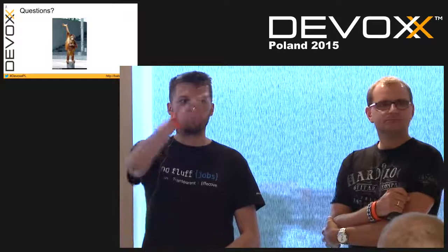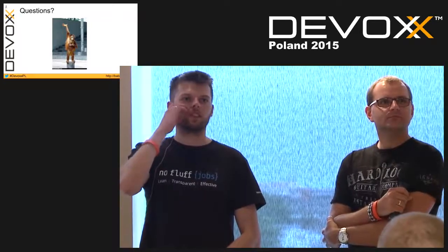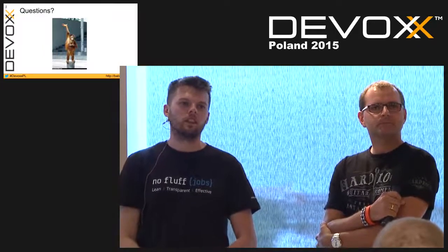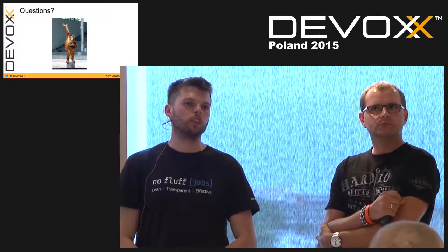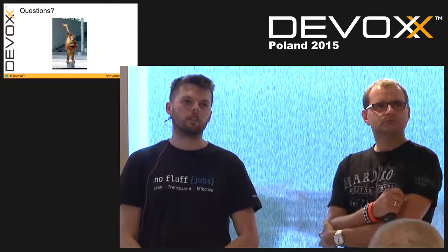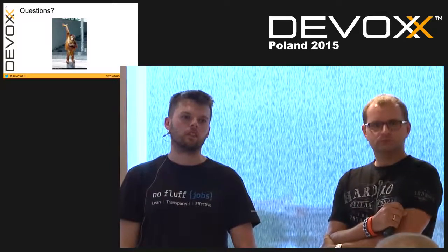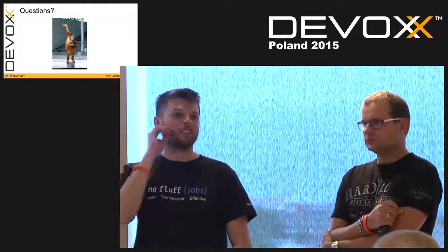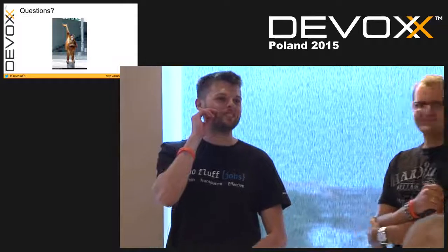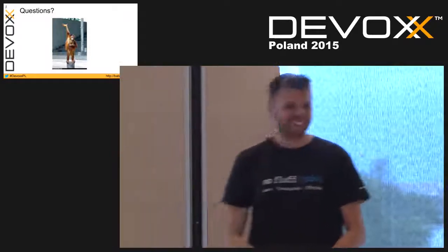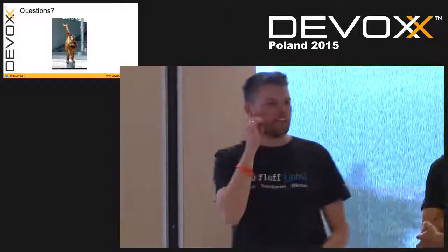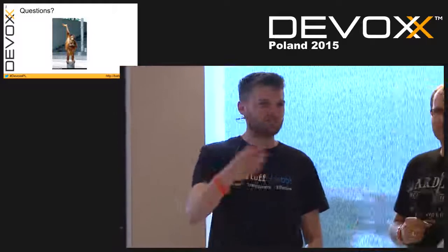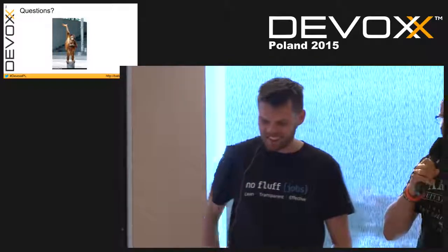Last question — do you have a plan to make it possible to execute a bash script remotely? For example, you have a Windows slave machine connected to Jenkins and want to execute a bash script. You can try coding it up — we would appreciate your contribution. Okay, time is up. The first five questioners can grab a mug. Thanks for coming.